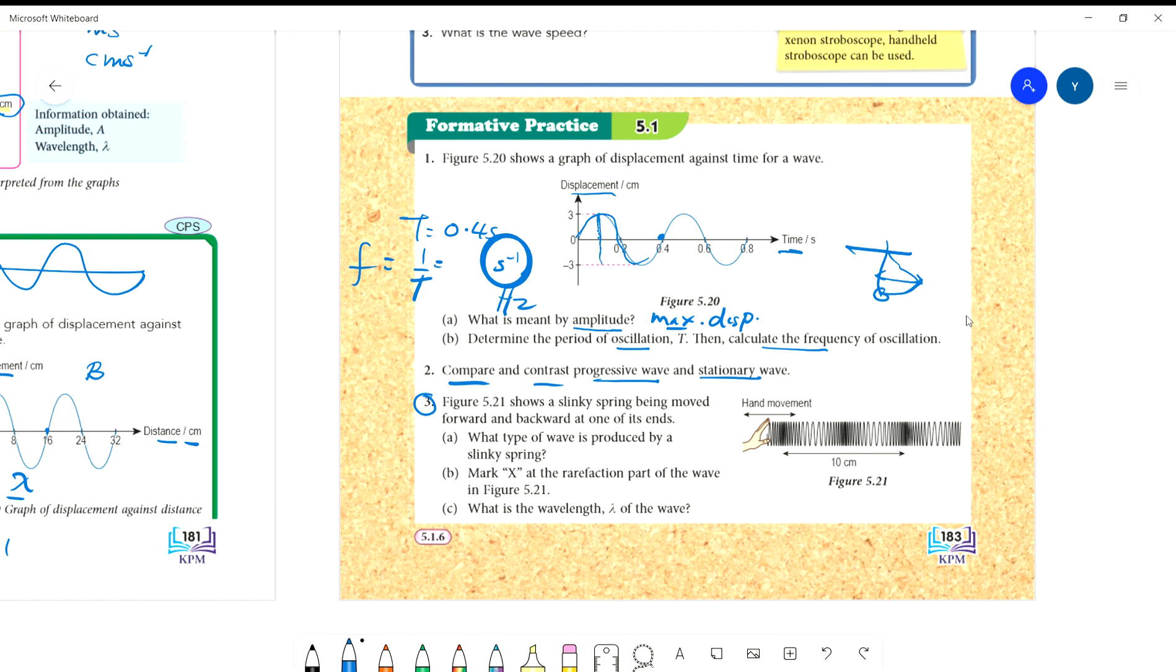Question 3: The figure shows a slinky spring being moved forward and backward at one of its ends. What type of wave is produced? Back and forth means it goes forward and backward - it compresses. When it compresses, you can see the vibration of the particle is parallel to the propagation. This is a longitudinal wave. It's like a worm moving - it vibrates like that to move forward, parallel. Mark X at the rarefaction parts of the wave. Rarefaction is the stretched part. During rarefaction, the wave looks like this - it becomes stretched.